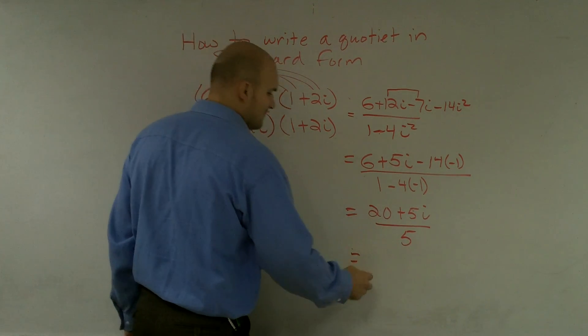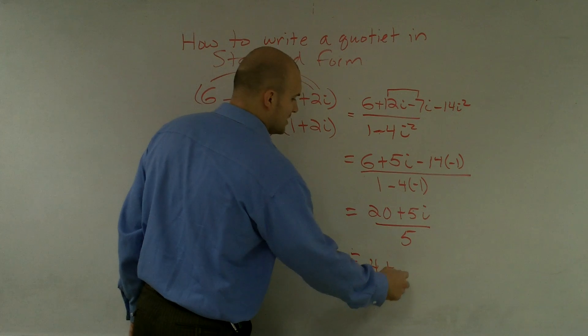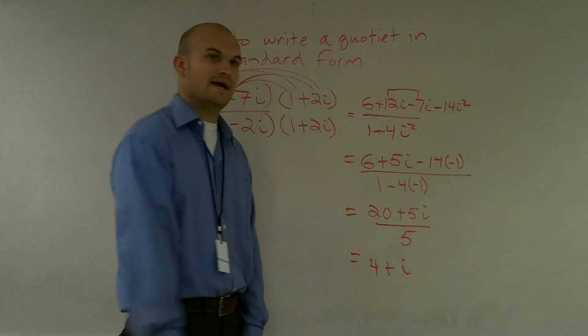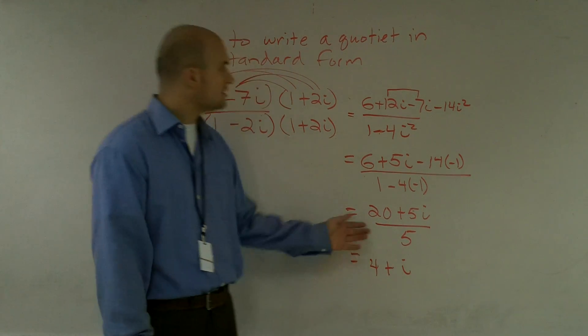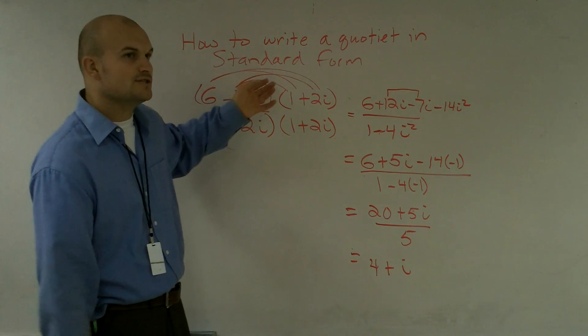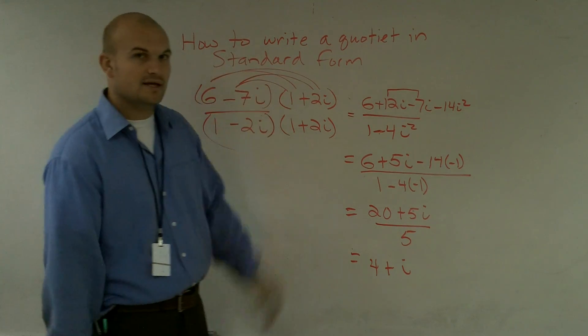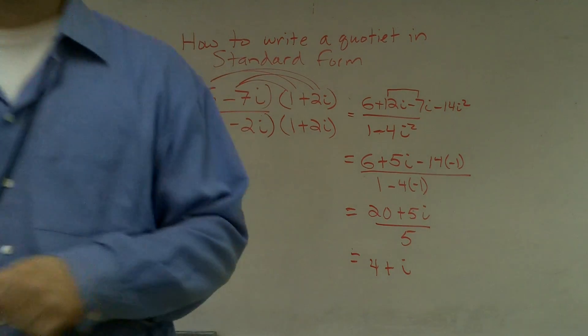And now I can go ahead and divide my 5 into 20 and my 5 into 5i. Therefore, my final solution, 20 divided by 5 is going to be 4 plus i. And I look at my answer, it's in standard form, that's correct. So that's how you write a quotient when dealing with complex numbers in standard form.